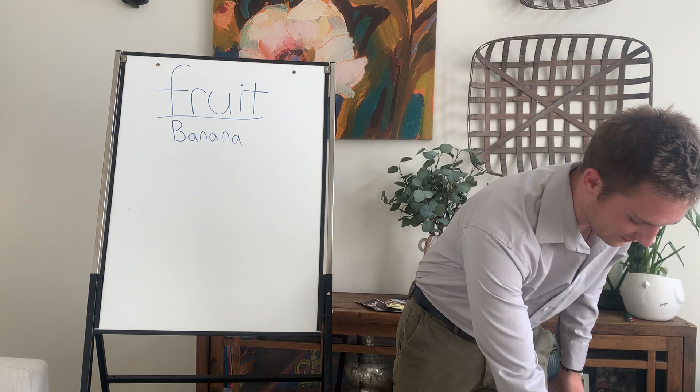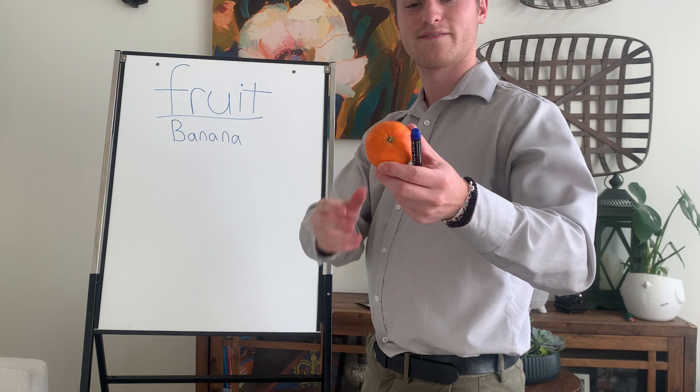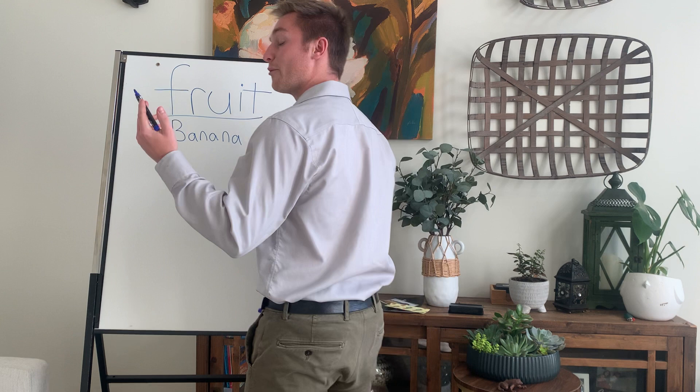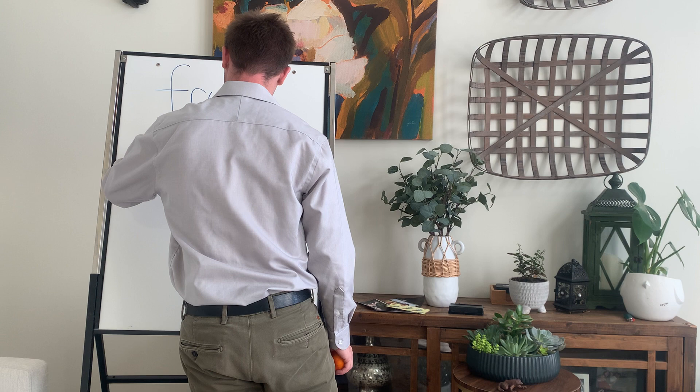Here's the next example: an orange. This is a mandarin orange, just a little one. We spell orange like this: orange.